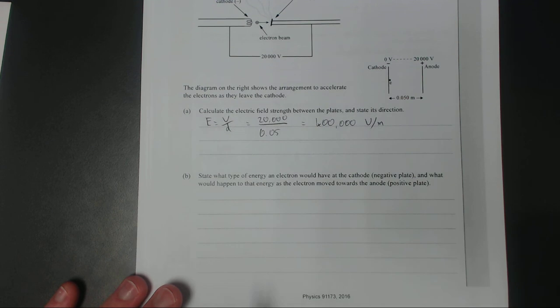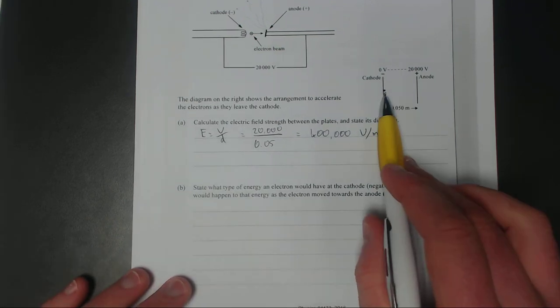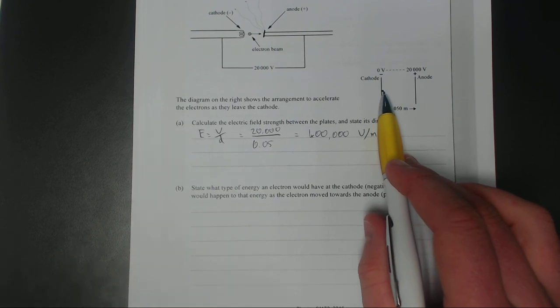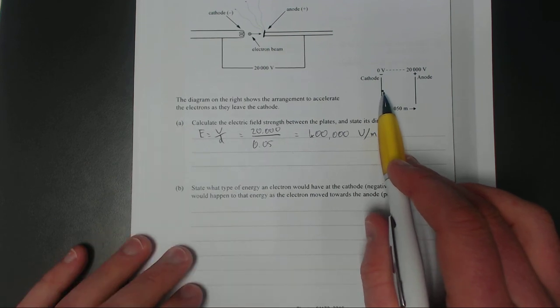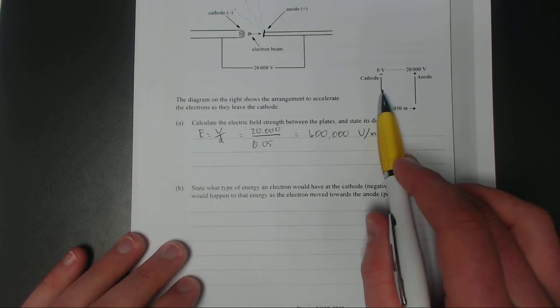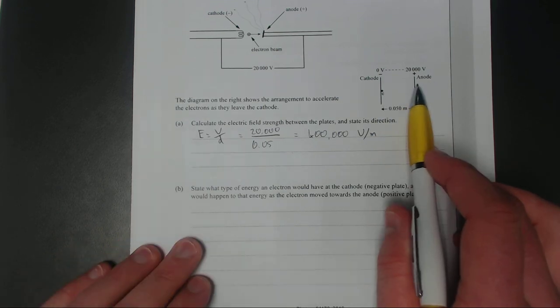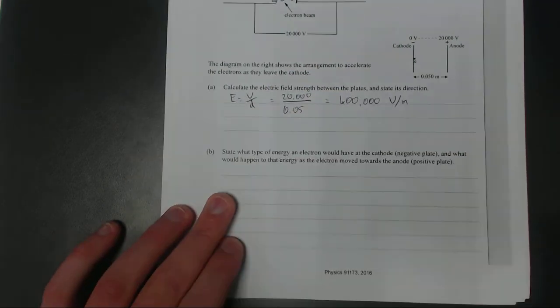Question B: State what type of energy an electron would have at the cathode, the negative plate, and what happened to the energy if the electron moved towards the positive plate. We have a diagram of it up here. We've got the electron. Just remember, electrons are negatively charged. Opposites attract, the same repel. So the electron is going to be repelled from the negative plate and it's going to be attracted towards the positive plate.